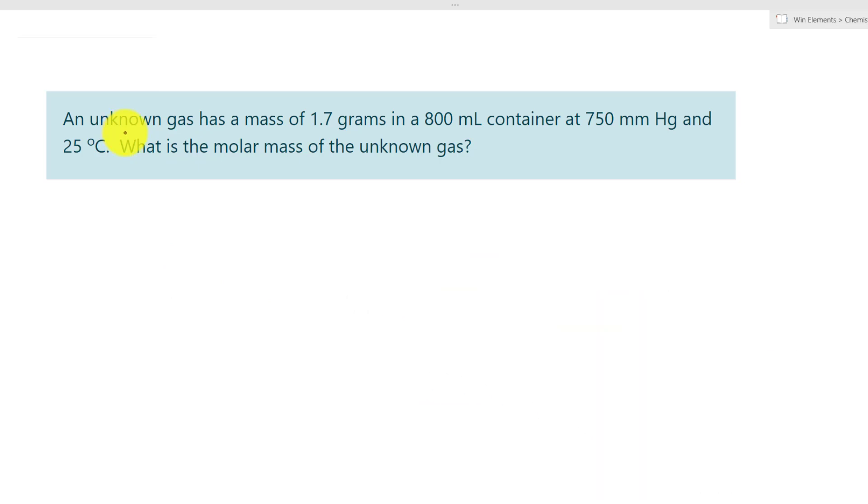So here we have an unknown gas that has a mass of 1.7 grams in an 800 milliliter container. This is at 750 millimeter mercury and 25 degrees Celsius. What is the molar mass of the unknown gas?